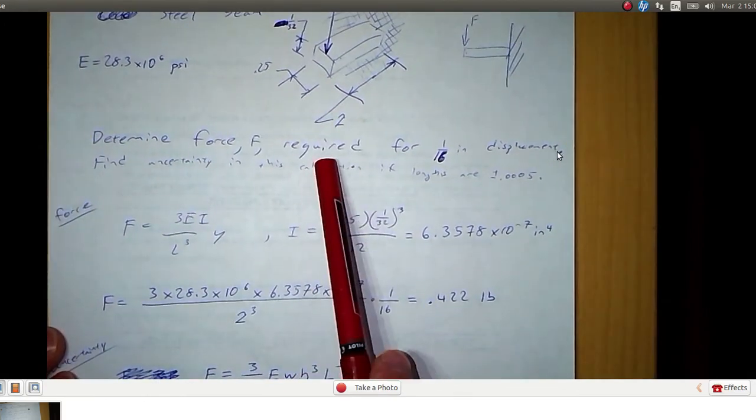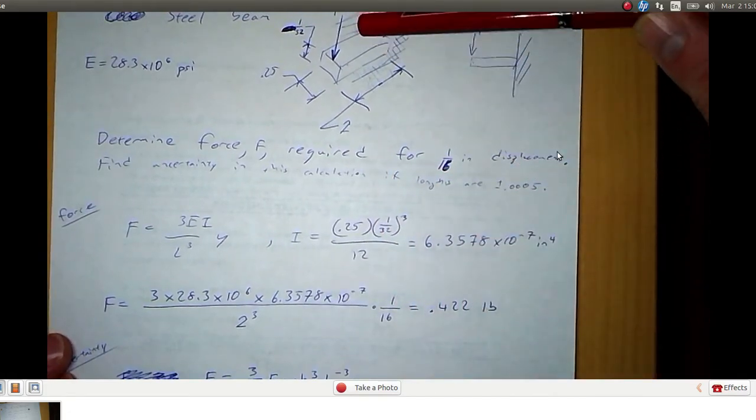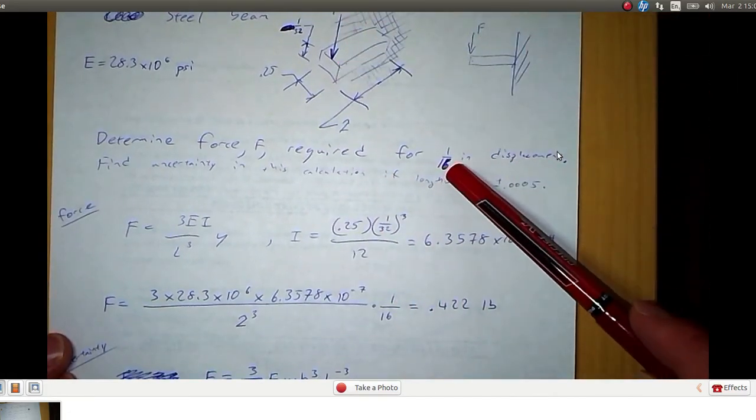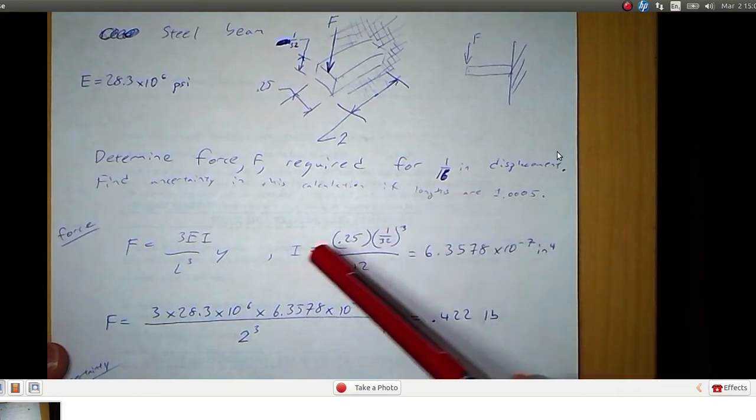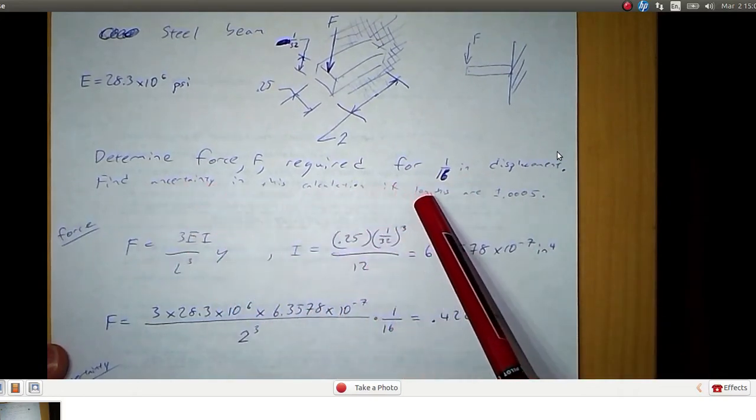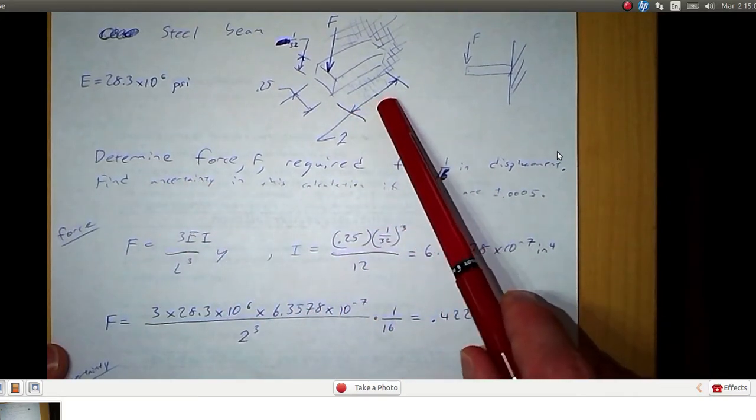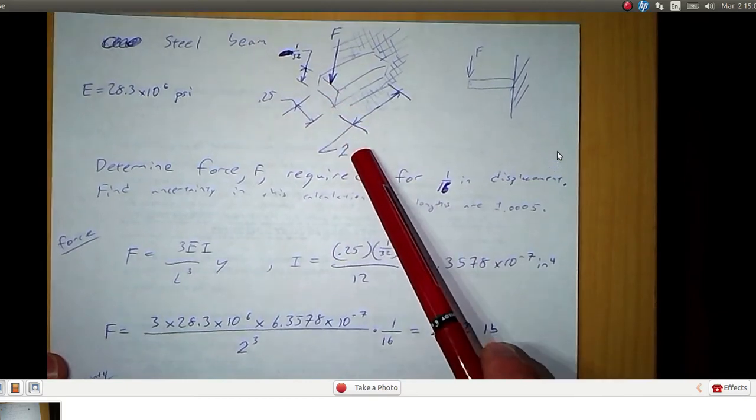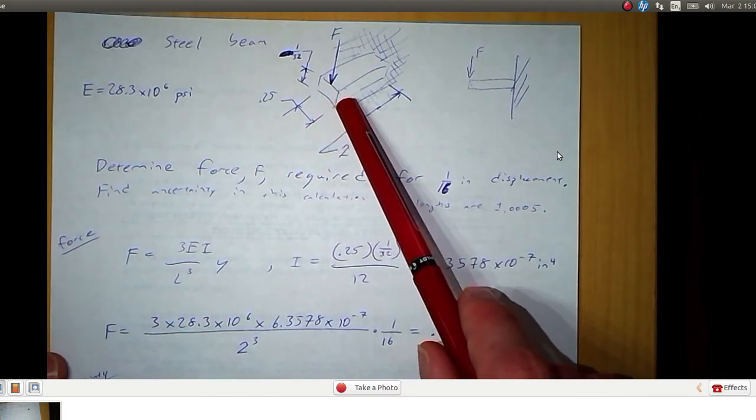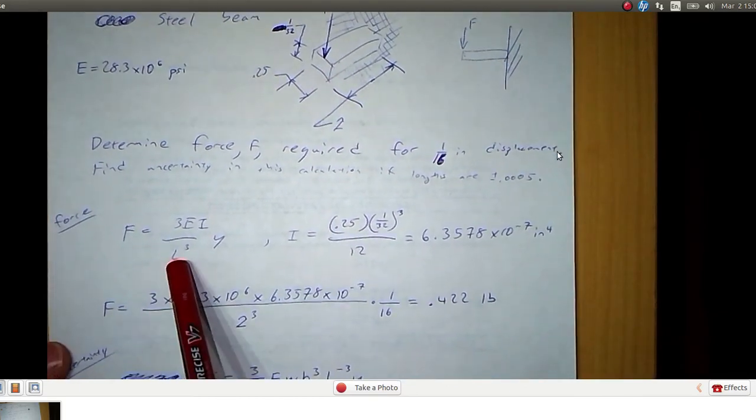And it's made of steel so the modulus of elasticity is given by this number. We want to find the force required for the beam to be displaced one sixteenth of an inch. And once we've done that we want to find the uncertainty given that the length measurements here have uncertainty of half of a thousandth.